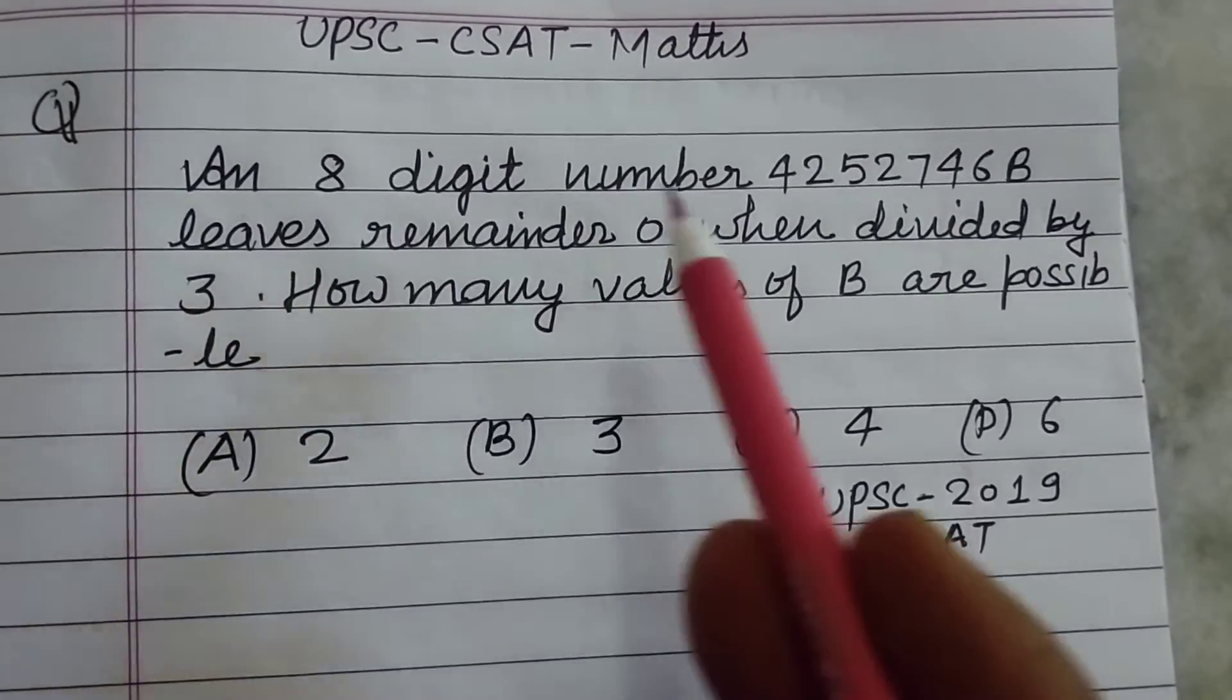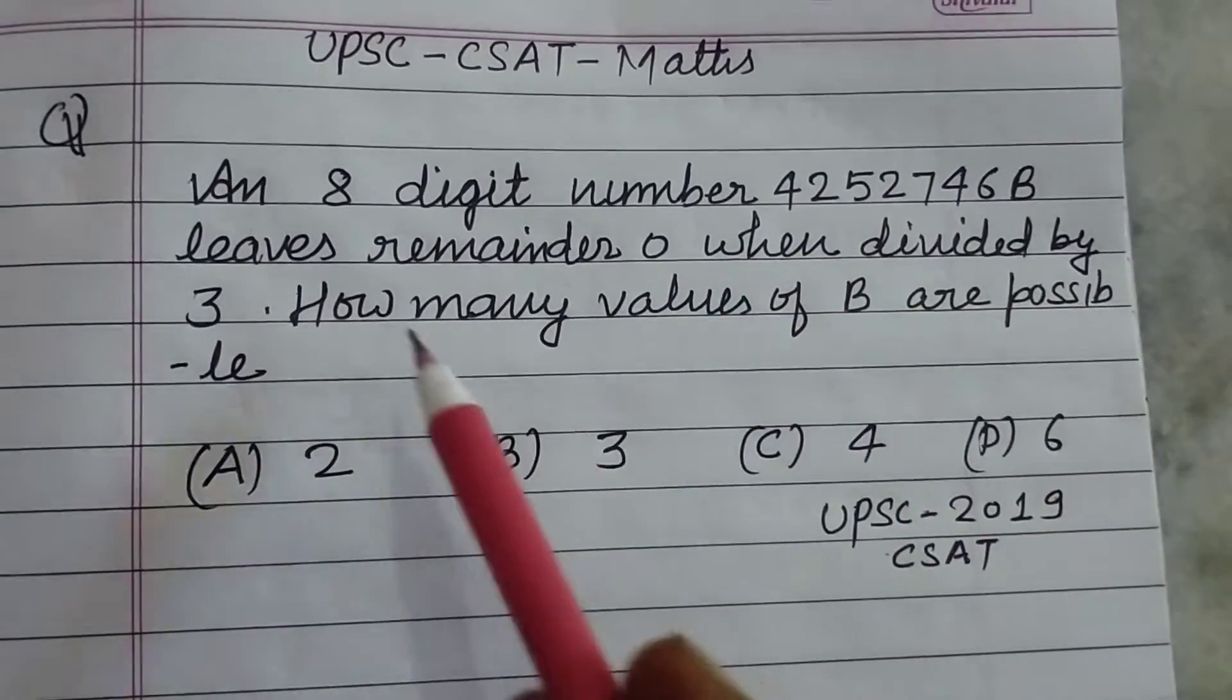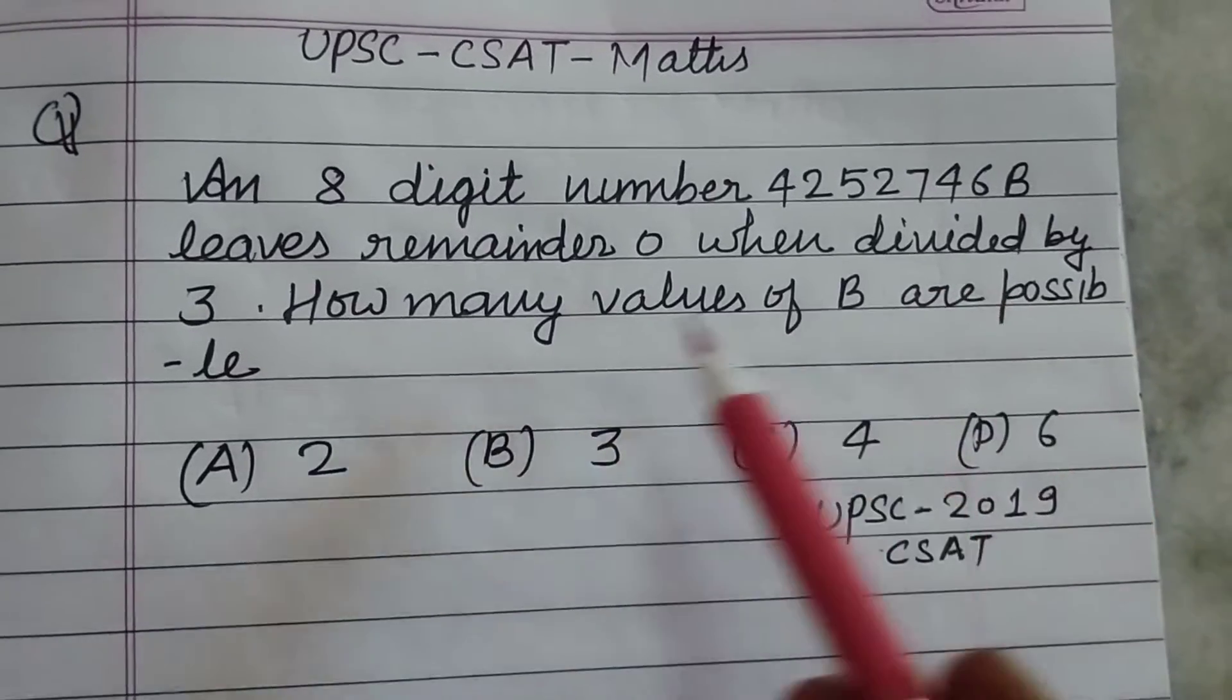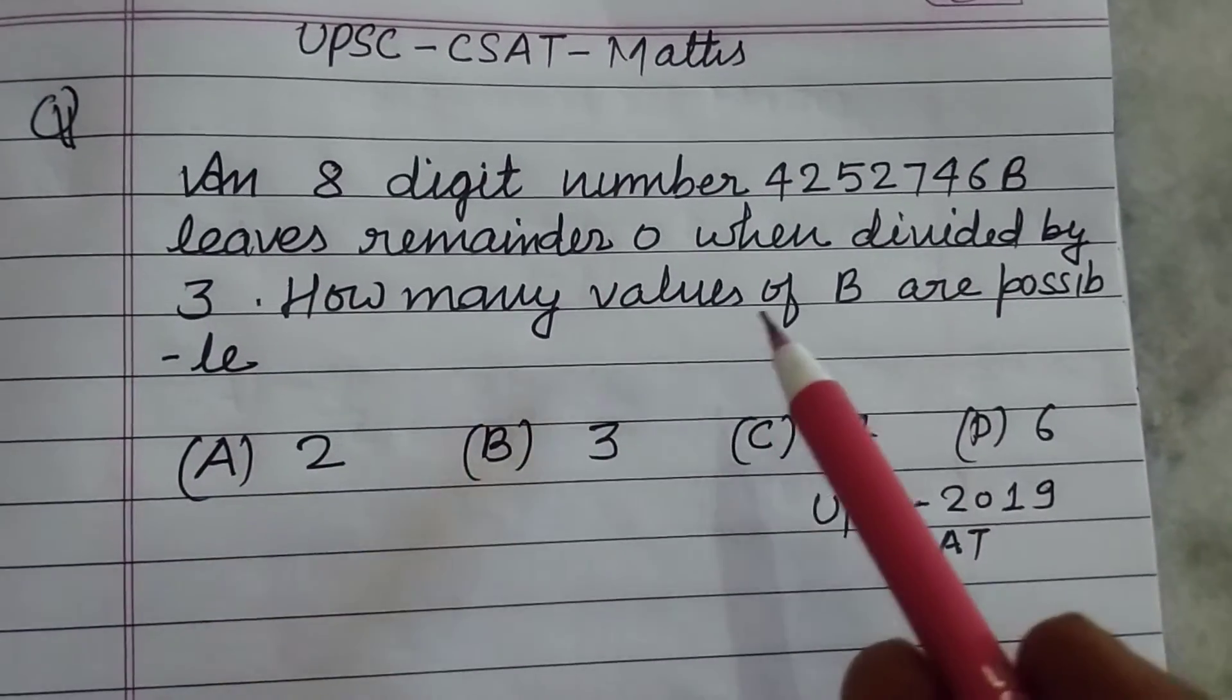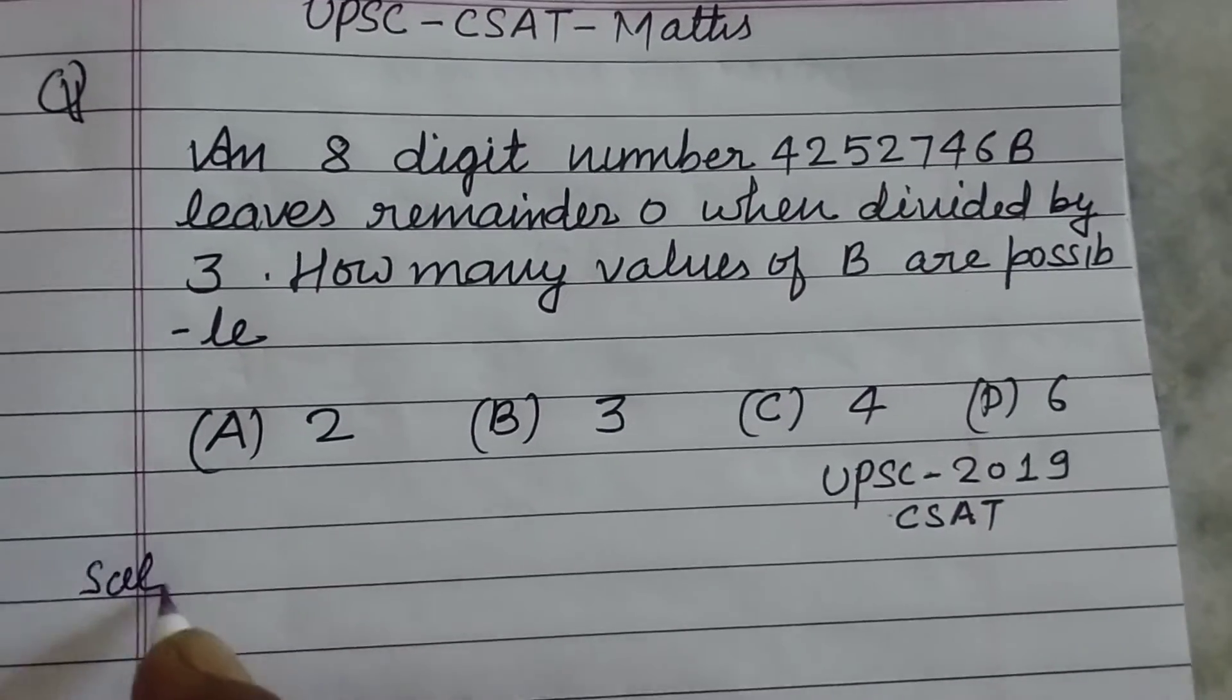An 8 digit number 4252746B leaves remainder 0 when divided by 3. How many values of B are possible?